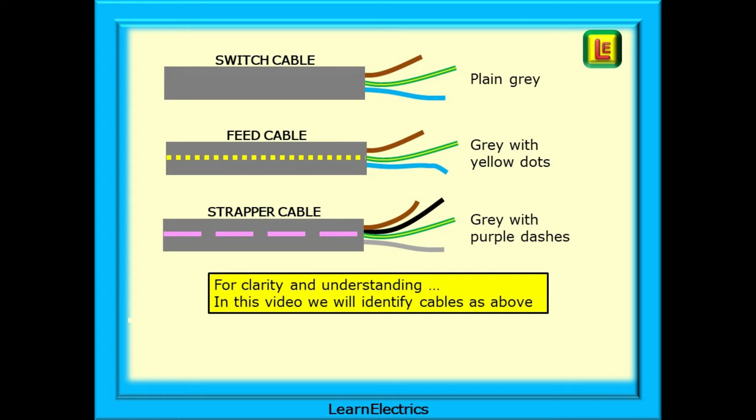Strapper cables are a three-phase plus earth cable that we often use in two-way lighting.